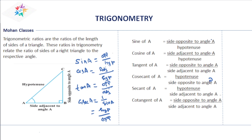Sine of A is equal to side opposite angle A divided by hypotenuse. Cosine is equal to side adjacent to angle A divided by hypotenuse. Tangent of A is equal to side opposite to angle A divided by side adjacent to angle A. Cosecant is hypotenuse by side opposite to angle A. Secant is equal to hypotenuse divided by side adjacent to angle A. Cot of angle A is side opposite to angle A divided by side adjacent to angle A. One angle must be a right angle — here, angle B is the right angle.